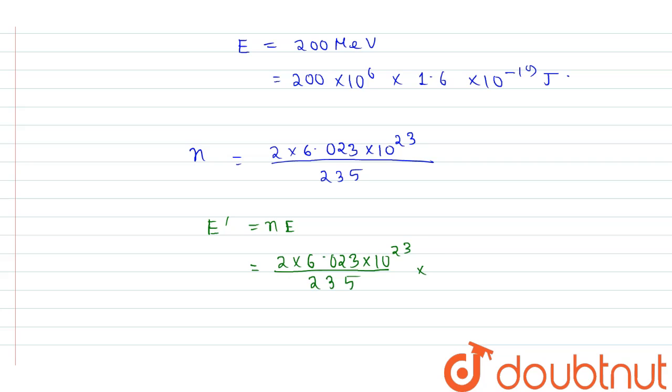and the value of E is 200 into 10 power 6 into 1.6 into 10 power minus 19. So from here we got the value of